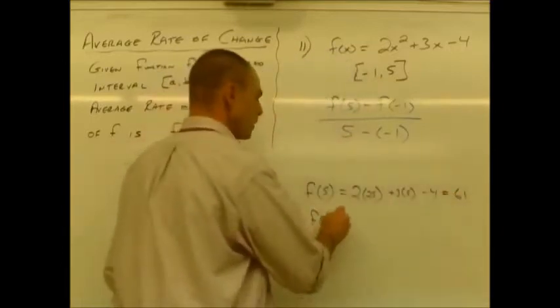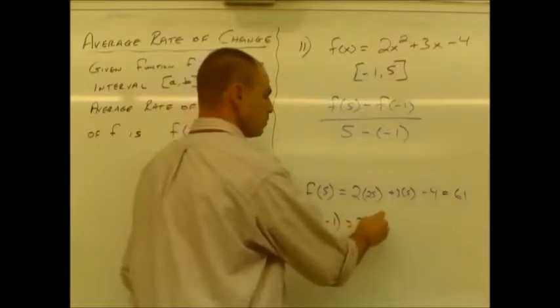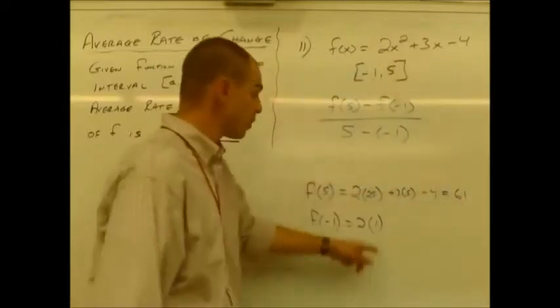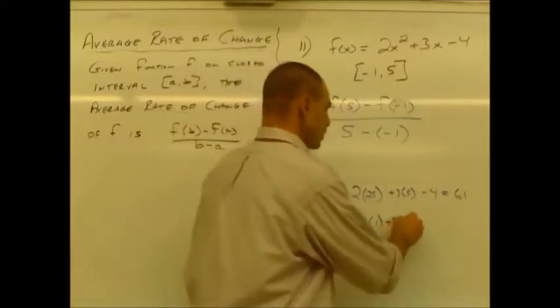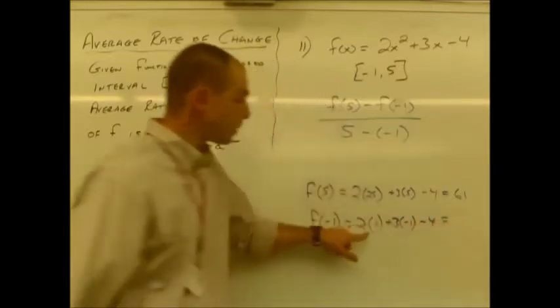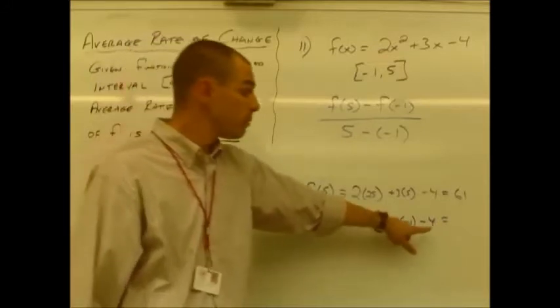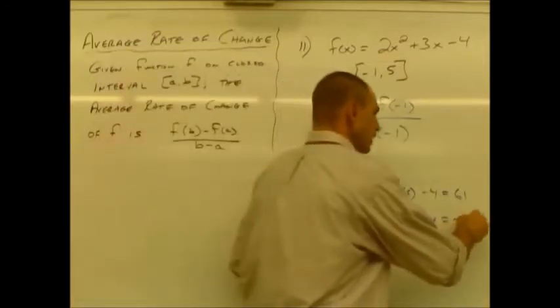And then f of negative 1 is going to be 2 times 1 because negative 1 squared is obviously a positive 1. And then plus 3 times negative 1 minus 4. So we have 2 minus 3, which is negative 1, minus 4. So that's going to be negative 5.